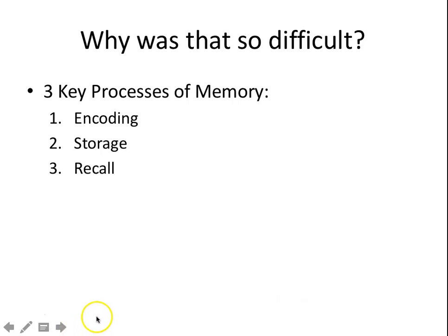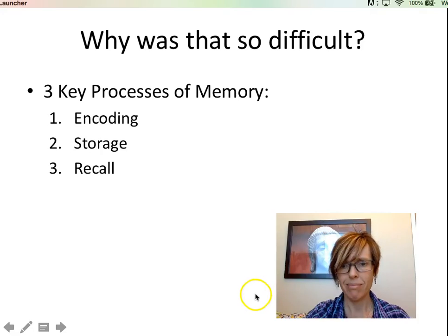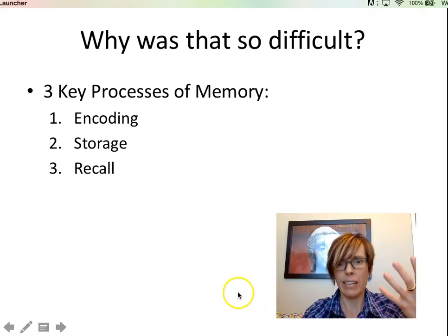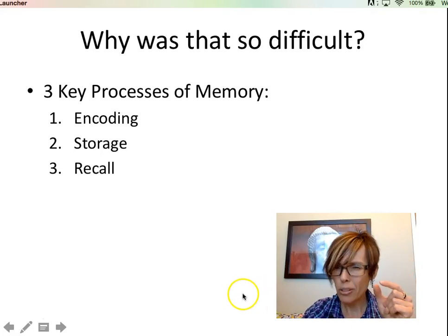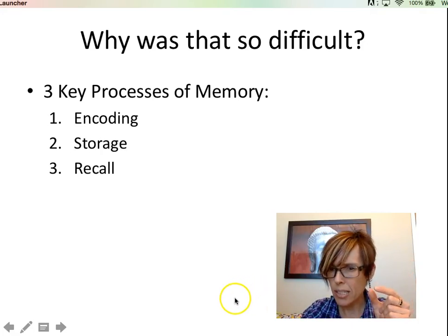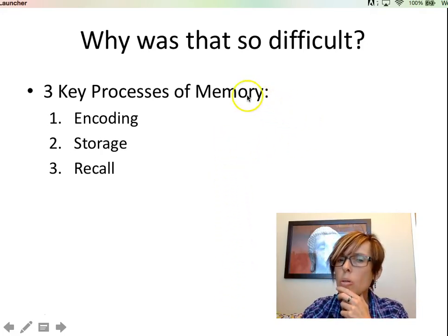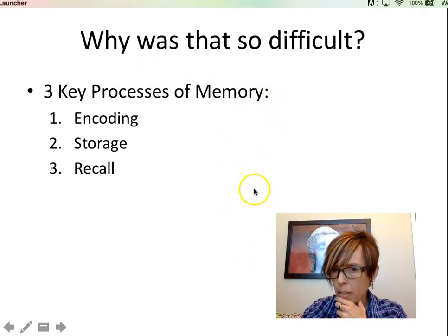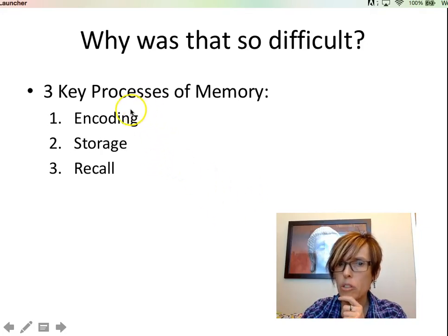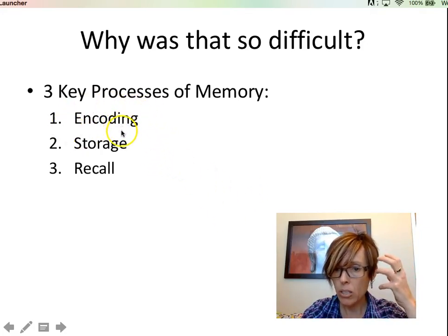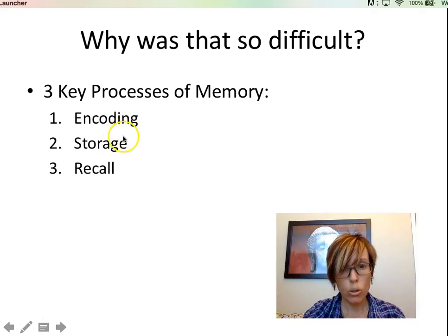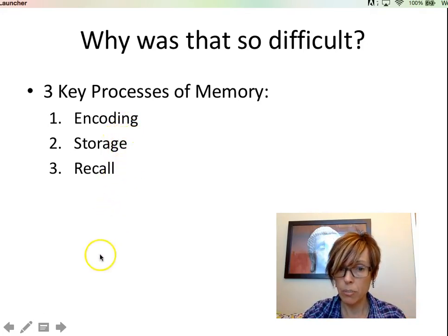Why was that so difficult? When you really think about it, it's a penny — that's the easiest thing in the world. But to learn the specifics is harder. We have three different processes in memory: encoding — putting information into our brains — storing it, and then being able to recall it.